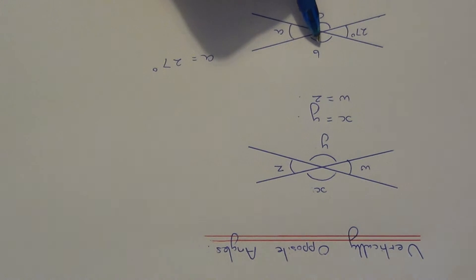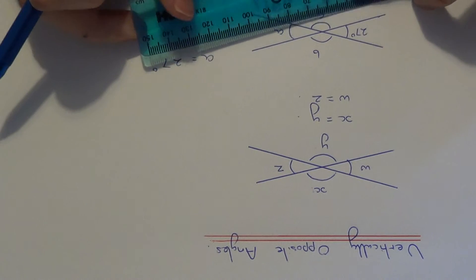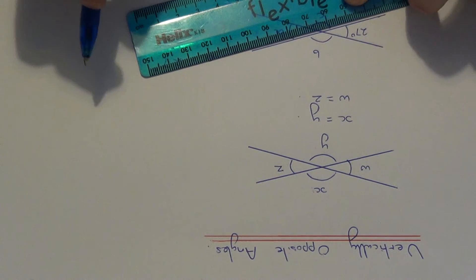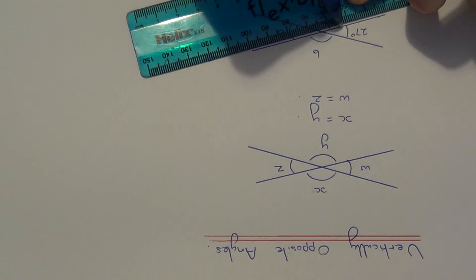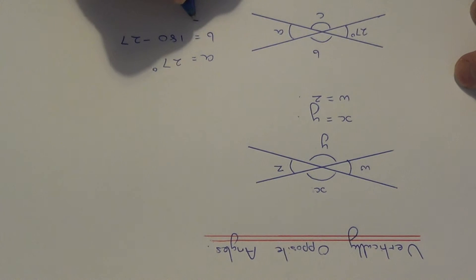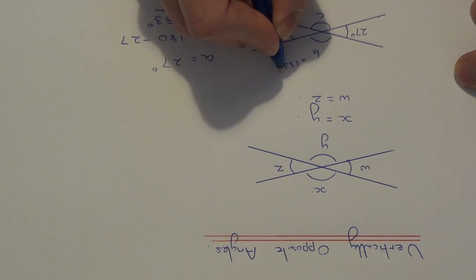To get angle B, all you need to do is subtract the 27 from 180 degrees. This is because these two angles will add up to 180 because they sit on a straight line. So angle B will be equal to 180 minus 27, and this will give you 153 degrees. So angle B is 153.